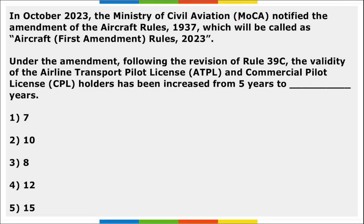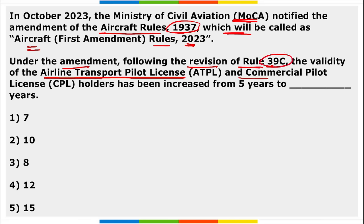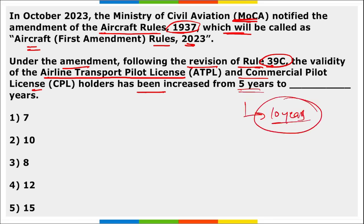Next, the Ministry of Civil Aviation notified the amendment of the Aircraft Rules of 1937, to be called the Aircraft Rules of 2023. Under the amendment, following the revision of Rule 39C, the validity of airline transport pilot license and commercial pilot license holders has been increased from 5 years to 10 years.